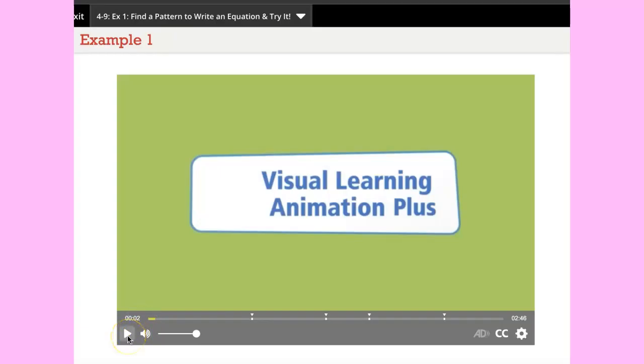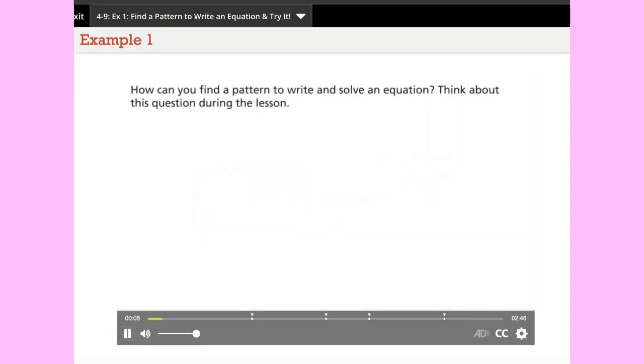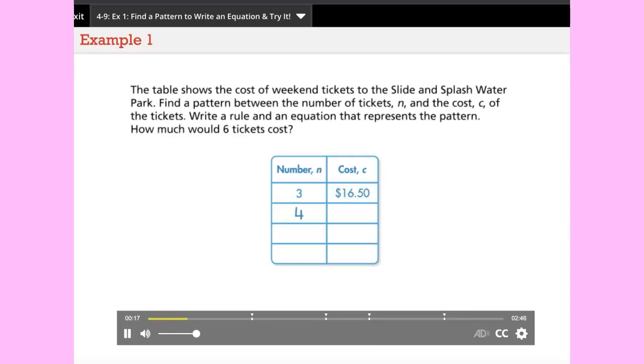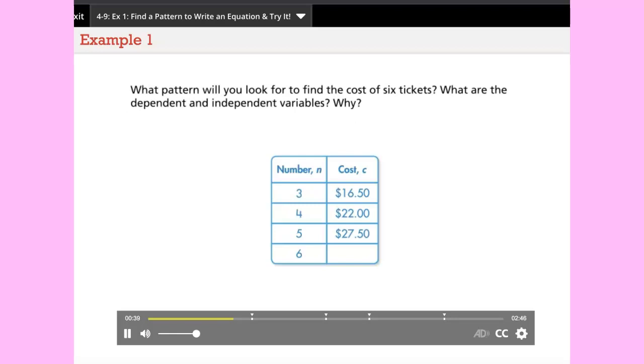Let's look at example number one. How can you find a pattern to write and solve an equation? Think about this question during the lesson. The table shows the cost of weekend tickets to the Slide and Splash Water Park. Find a pattern between the number of tickets n and the cost c of the tickets. Write a rule and an equation that represents the pattern. How much would six tickets cost? What pattern will you look for? What are the dependent and independent variables and why?